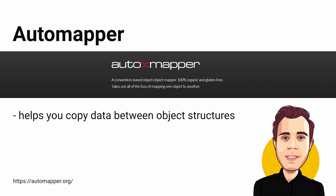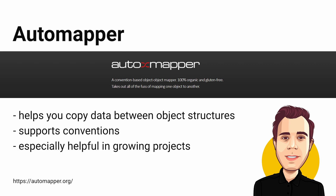AutoMapper is a tool that helps you copy data from one object structure to another. If you decouple your application into different layers or modules, you quickly need to copy data between different models — it's often boring code to write and maintain. AutoMapper supports conventions; for example, you can map from one object to another based on property names, and it also handles much more complex situations. In smaller projects, you might want to write the mapping code yourself, and that's fine. However, if you think you need help to solve that problem, AutoMapper offers a great solution.